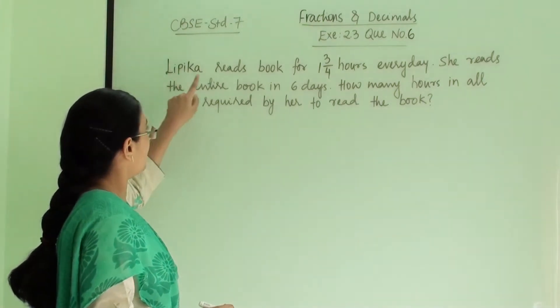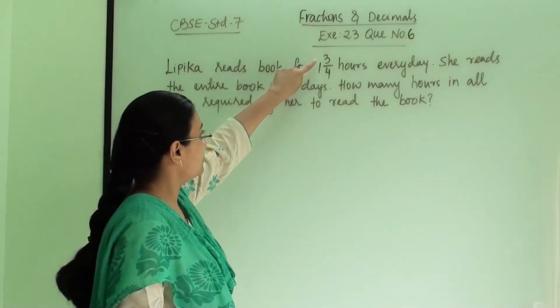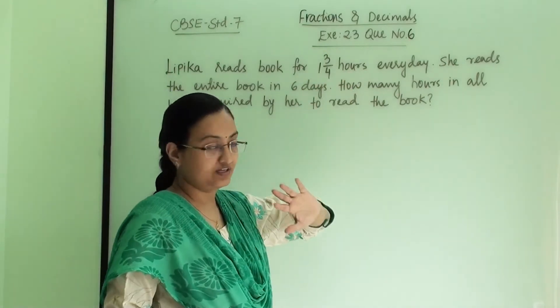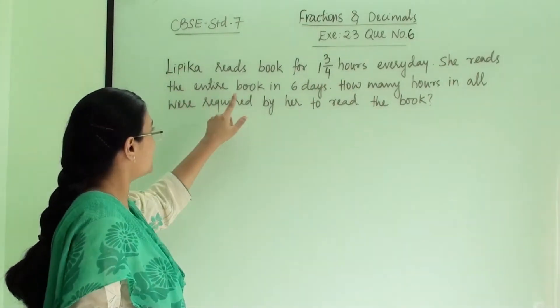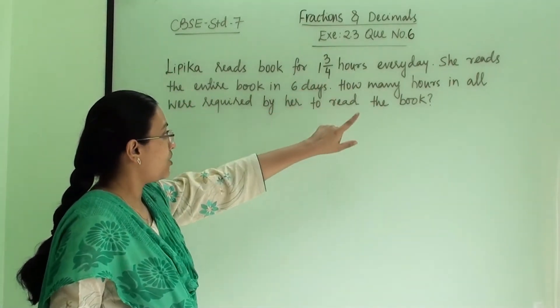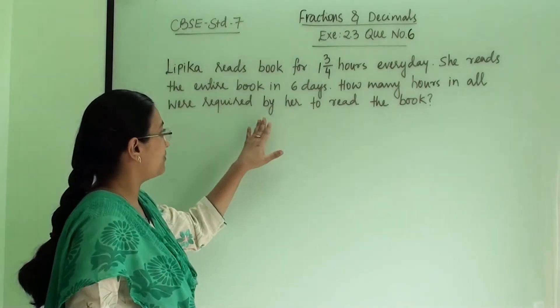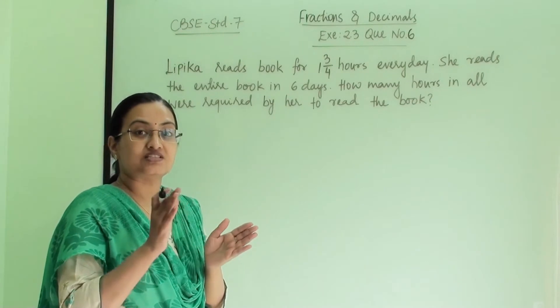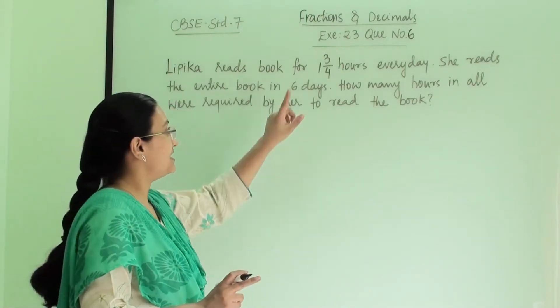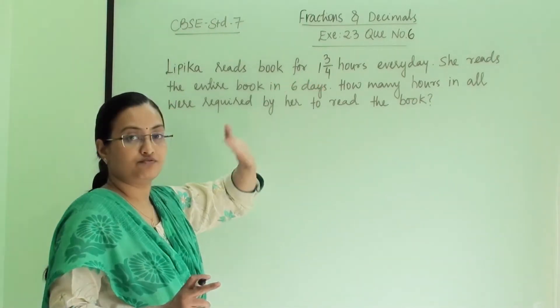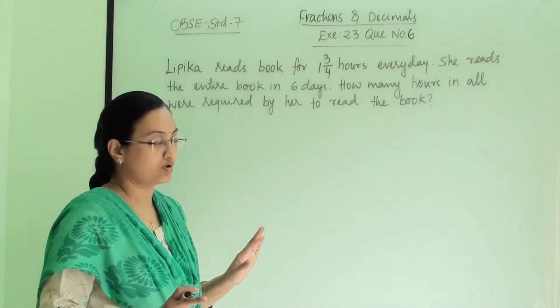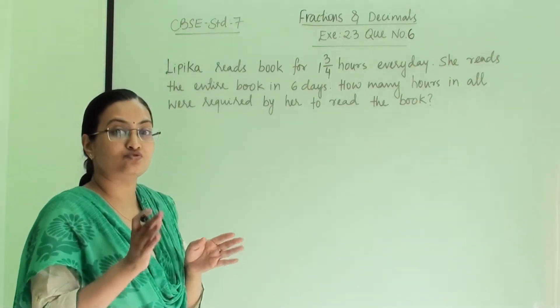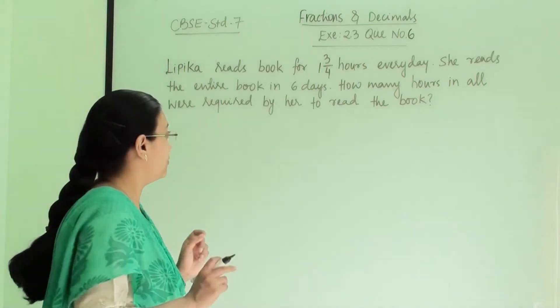The question is: Lipika reads a book for 1 3 by 4 hours every day. She reads the entire book in 6 days. How many hours in all were required by her to read the book? That means for 6 days she is reading every day 1 3 by 4 hours and she finishes the book. So how many hours in total she required to complete the book?